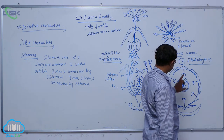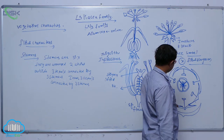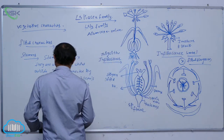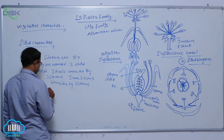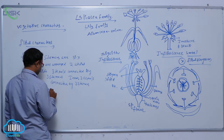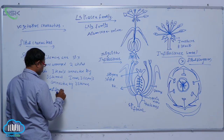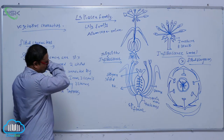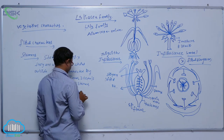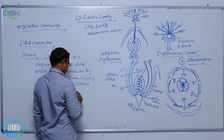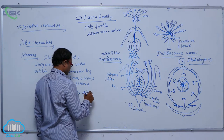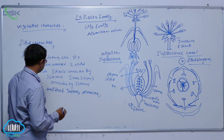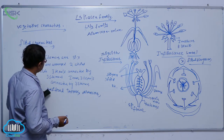Inside — one, two, three — so totally six stamens. In the six stamens, generally stamens are basifixed, introrse, and dithecous. Okay, so these are the stamens.